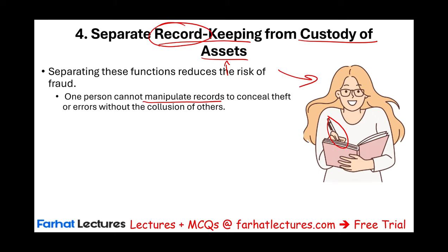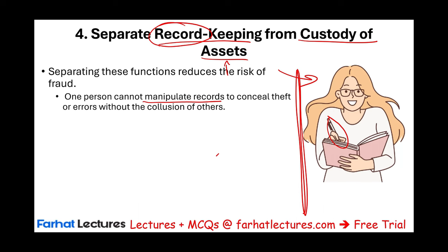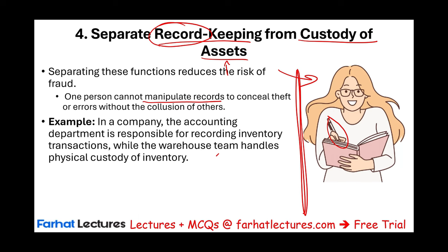If they can change the records, they should have no access to assets. And the same is true: the person that can handle the asset cannot handle the books. In a company, the accounting department is responsible for recording inventory transactions, while the warehouse team handles physical custody. Physical custody and record keeping are separate.